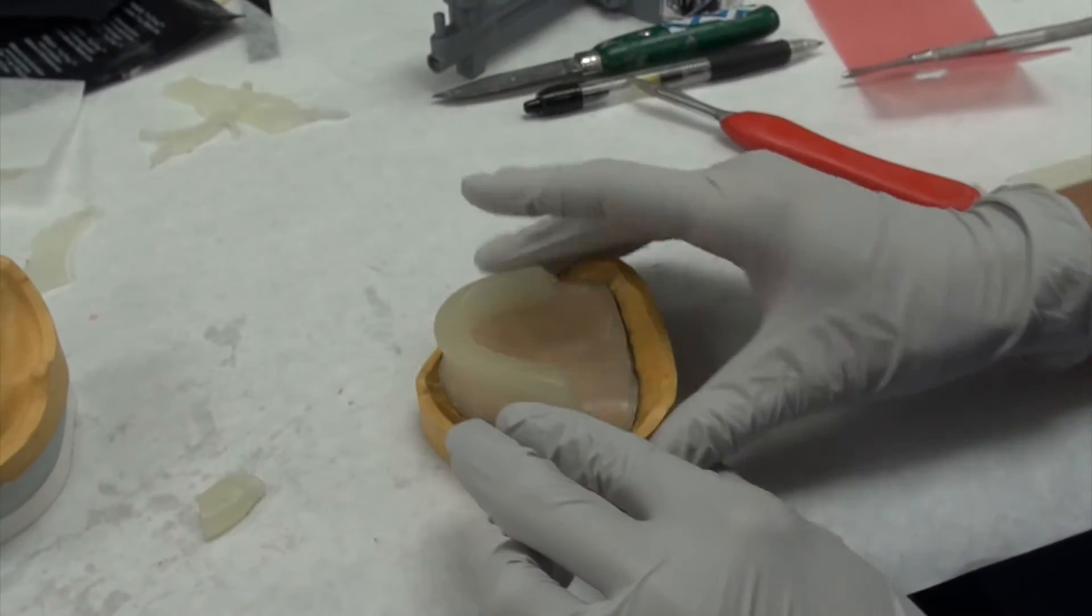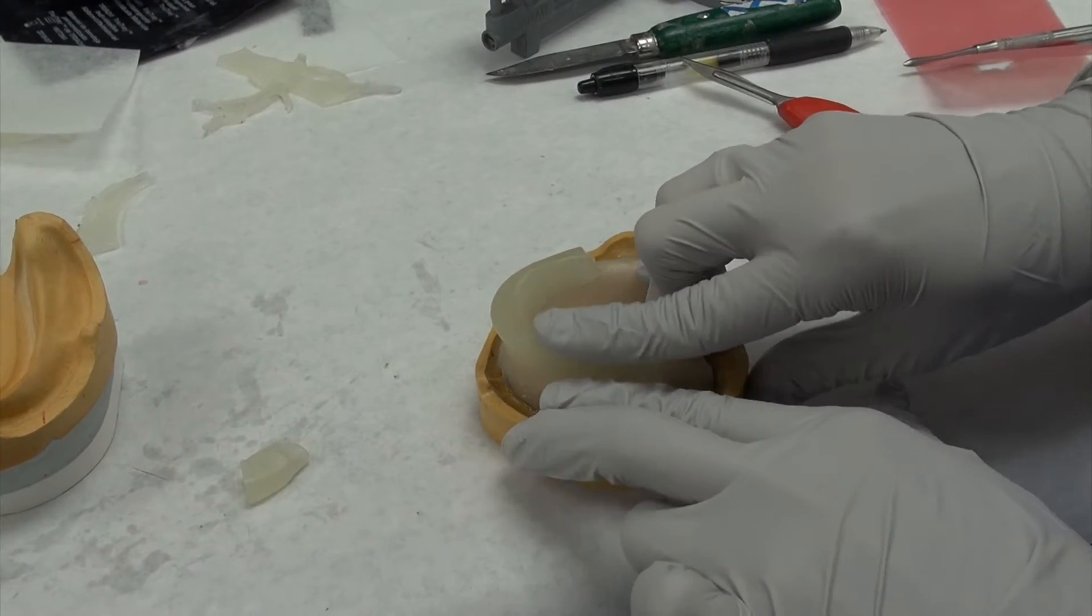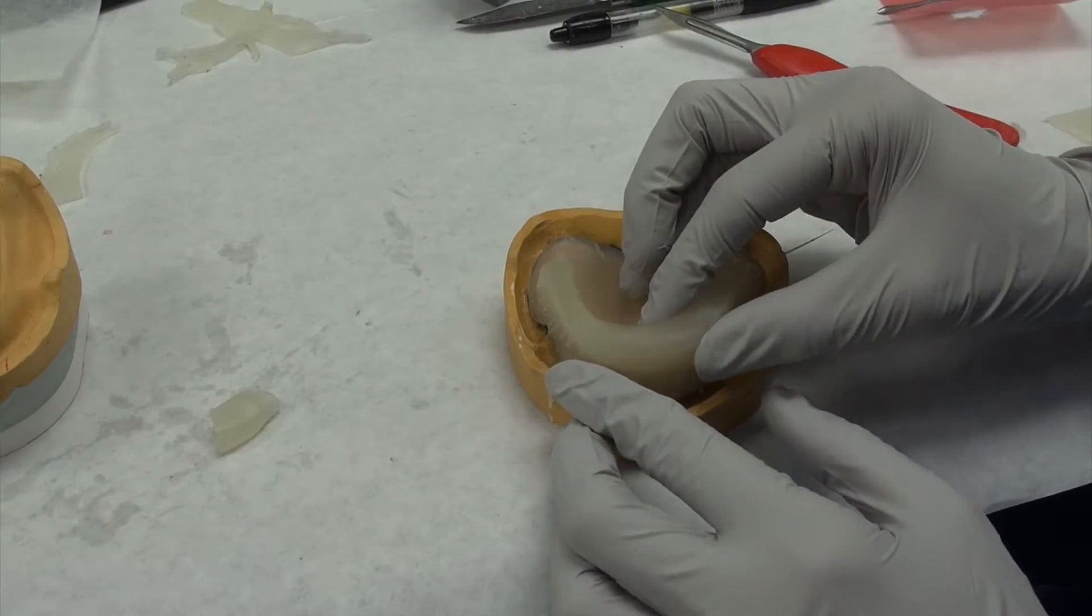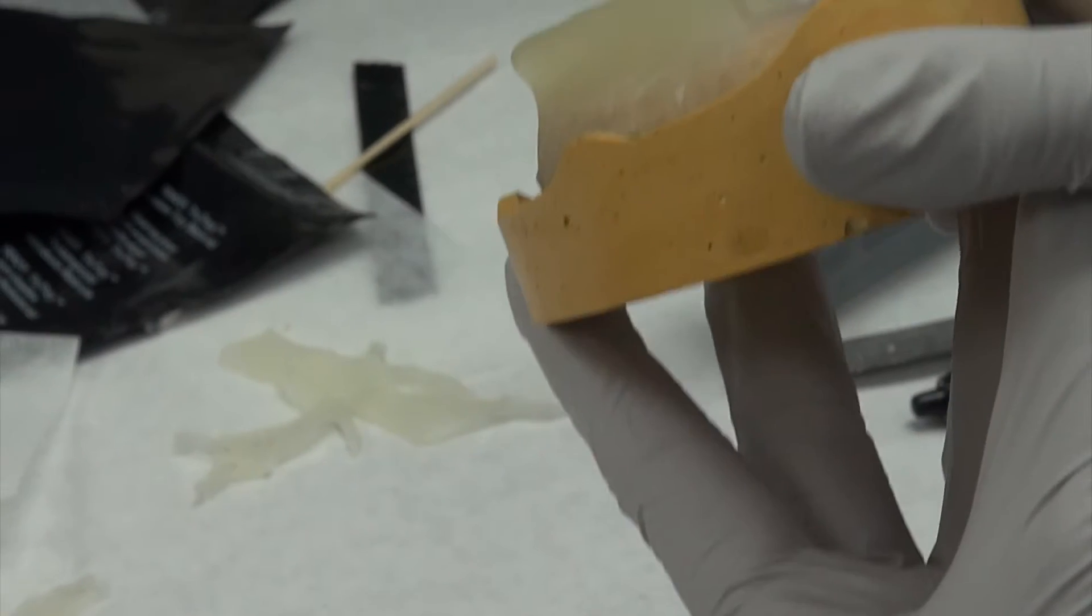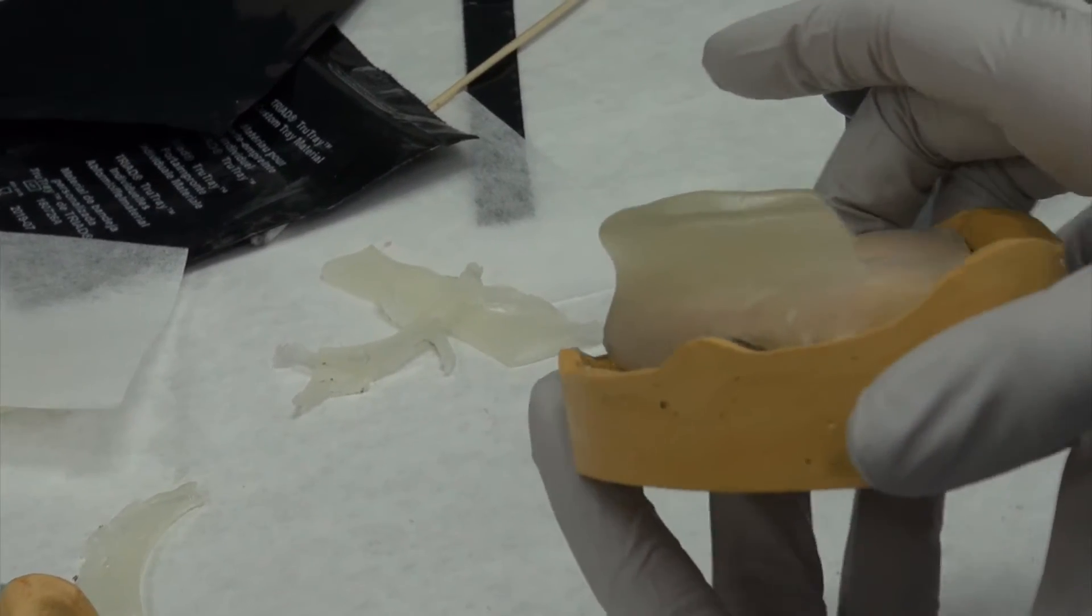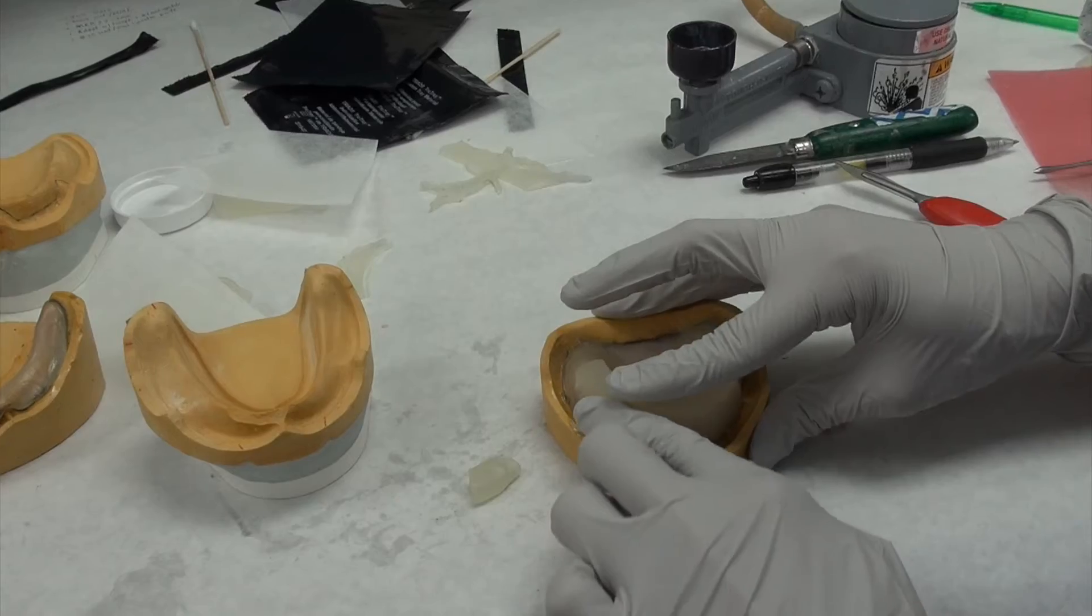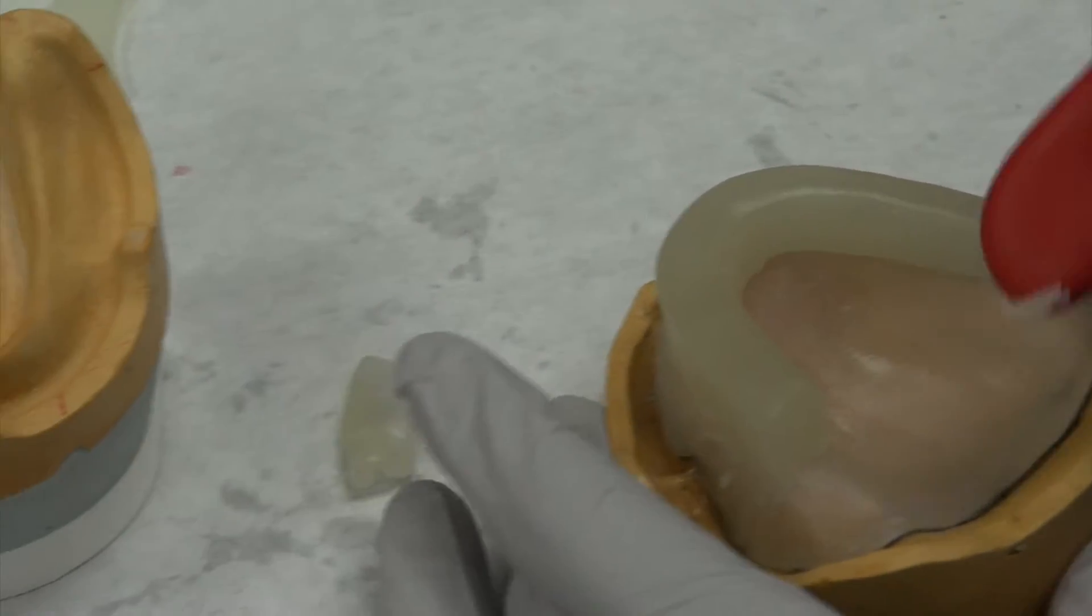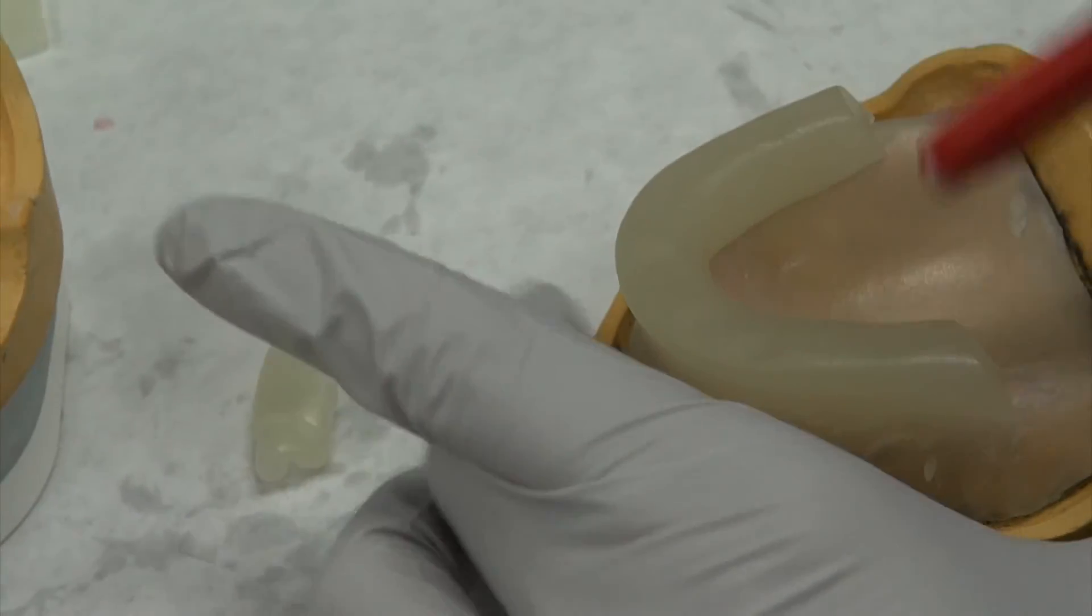So it's easier to create the concavity prior to it setting rather than incorporating it after the fact. So do you see how it's forming just a little bit of a lip? That's where my finger was. Perfect concavity. See how it's flat there? We're just going to continue it on.